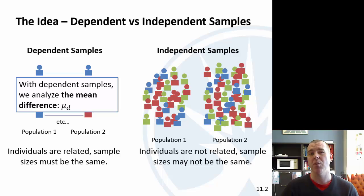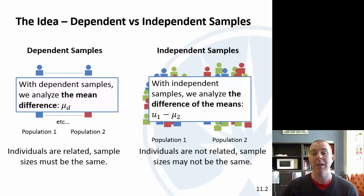When we have dependent samples, what we analyze is the mean difference. Each pair has a difference, and so we analyze the average difference. When we have independent samples, we look at the difference of the means. Language here is important. Dependent samples, we're looking at the average difference. Independent samples, we're looking at the difference in the averages.